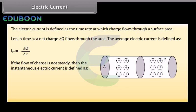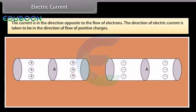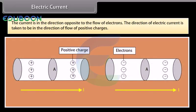Electric current: If the flow of charge is not steady, then the instantaneous electric current is given by dQ/dt. The SI unit of current is the ampere. The current flows in the direction opposite to the flow of electrons; the direction of electric current is taken to be in the direction of flow of positive charges.